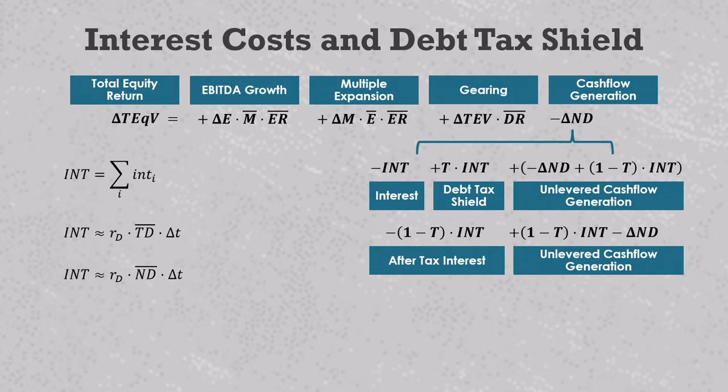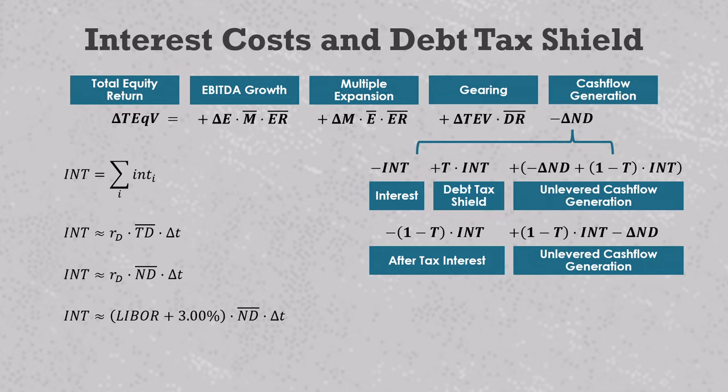This should get you fairly close and you can even swap out the average total debt number with an average net debt if that's what you have. Chances are that in a levered deal, there's not much capital just sitting on the company's balance sheet, at least not enough that would materially distort these numbers. Another thing you could do is try to plug in LIBOR plus 300 basis points for the interest rate. Quite often you'll find this substitution in the academic literature, used where researchers don't have access to actual interest rates or capital structure data because they're dealing with hundreds or thousands of companies.